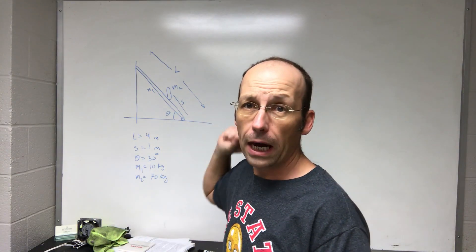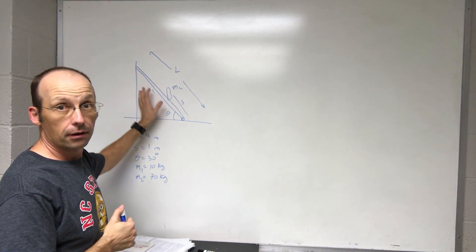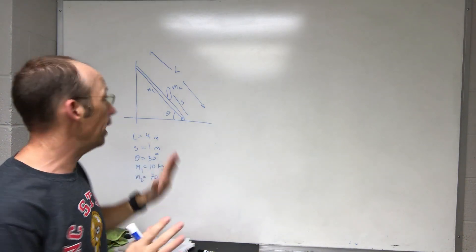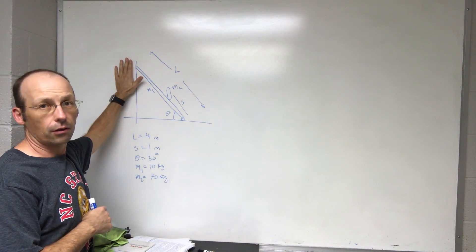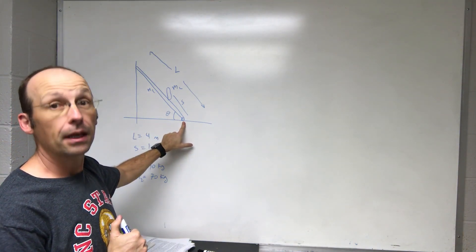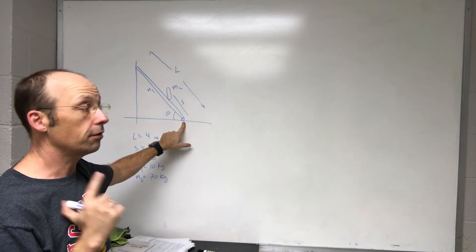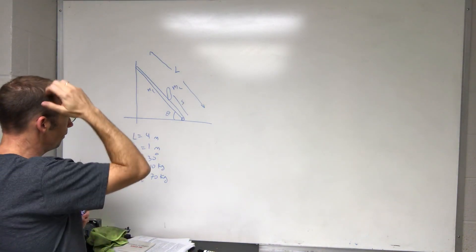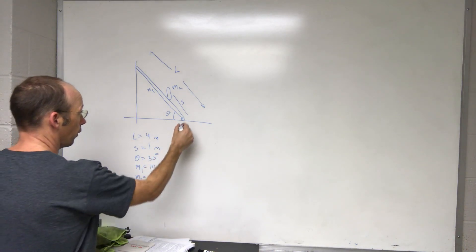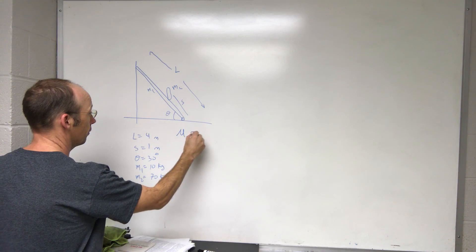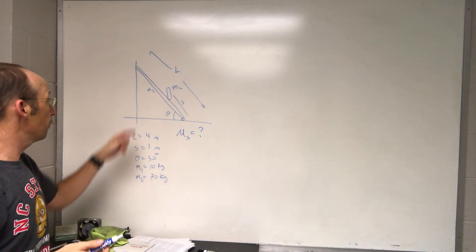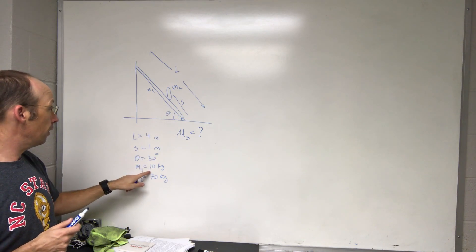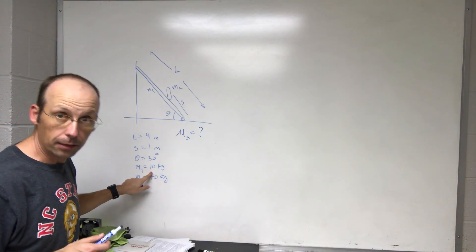Here is my problem: I have a ladder leaning up against a wall, and there's a person on the ladder. The wall has no friction, but there has to be friction at the bottom. The question is: what does the minimum coefficient of static friction (mu_s) have to be for the ladder not to slide? The length of the ladder is 4 meters, the person is 1 meter up the ladder, the angle is 30 degrees, the mass of the ladder is 10 kg, and the human is 70 kg.